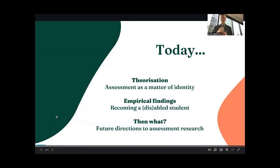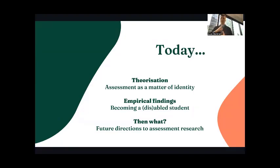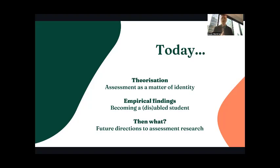In this talk I will be focusing on three different elements. First, I will start by theorizing — what are we talking about when we talk about assessment and student identities? I will argue that assessment is first and foremost a matter of student identity formation. Next, after doing a chunk of theorizing, I will ground these ideas in empirical findings based on my postdoctoral project. And I will address how students become disabled students through assessment. In the final part I will briefly outline some future directions for assessment research.